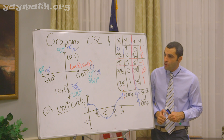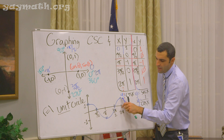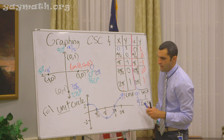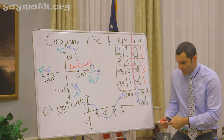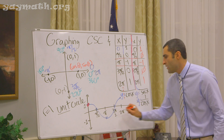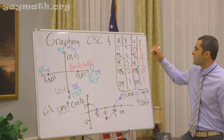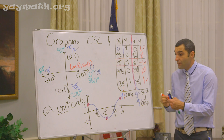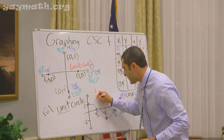Now reciprocate in red. One over one is one. One over zero is undefined. One over negative one is negative one. One over zero is undefined. One over one is one. Now put cosine down in blue — here, here, here, here, and here — and we get our curve effect. That's one period of cosine. The peaks and valleys are shared between cosine and secant, and you have undefined at the zeros.